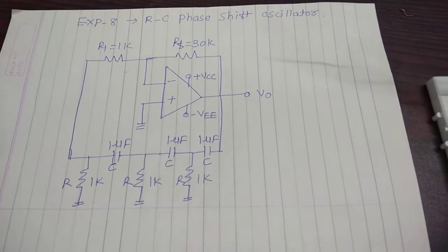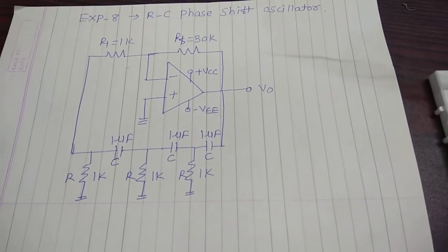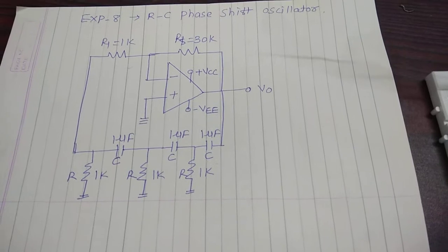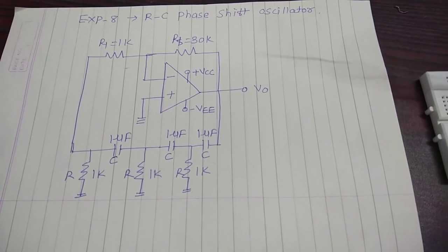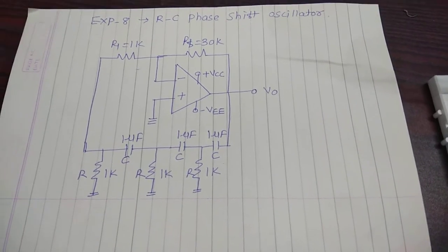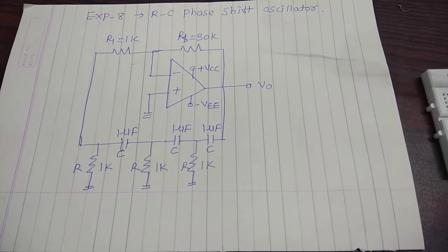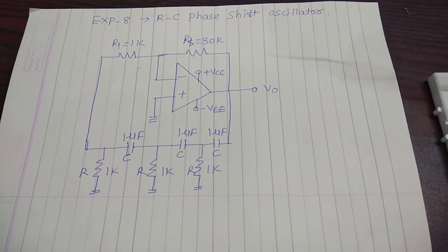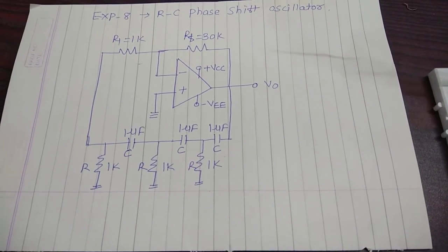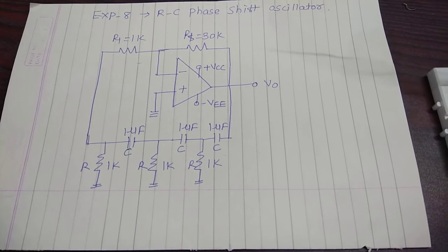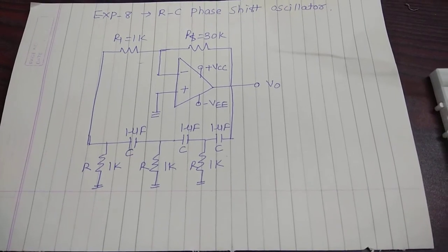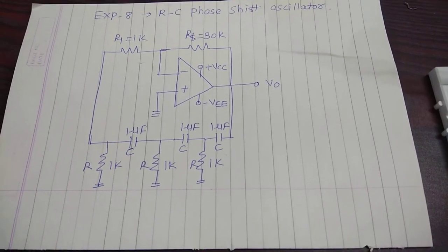Hello students, we will see our lab number 8, and that is about the RC phase shift oscillator. Oscillator means it will generate its output signal — it is an internally generated signal, which is the output signal for the oscillator.